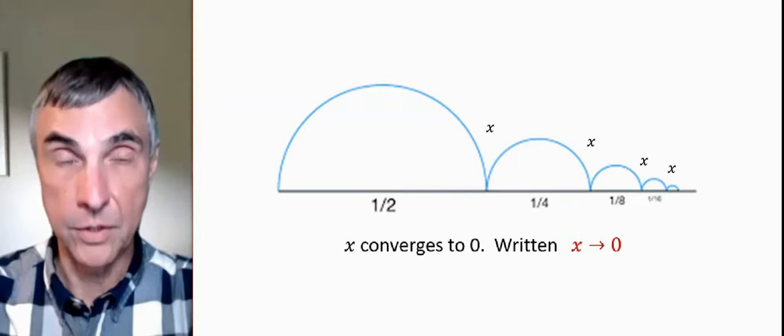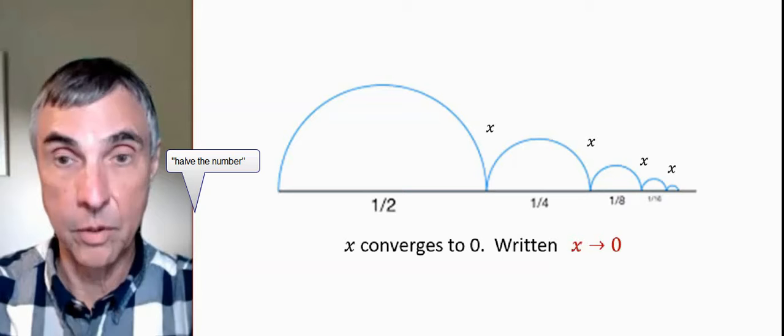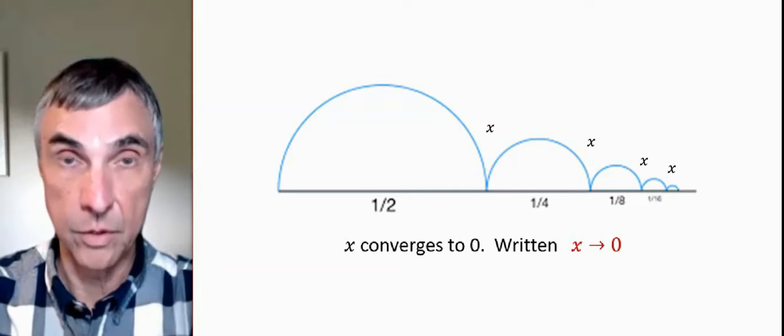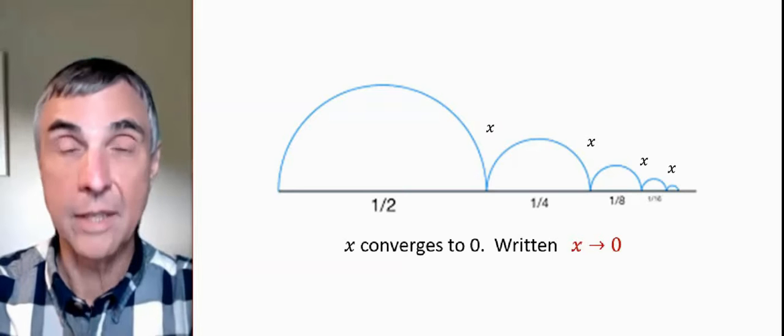If we consider this process as happening in time, let's suppose we have the number every second, then after a certain amount of seconds we can calculate how close we are to zero but we're never at zero. That's the idea of convergence.